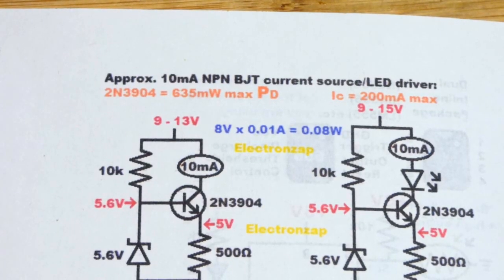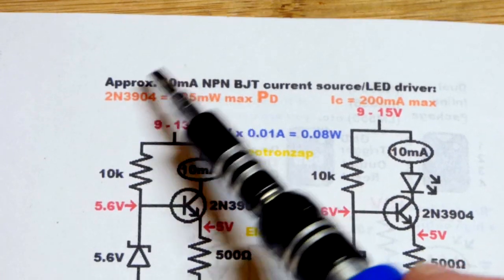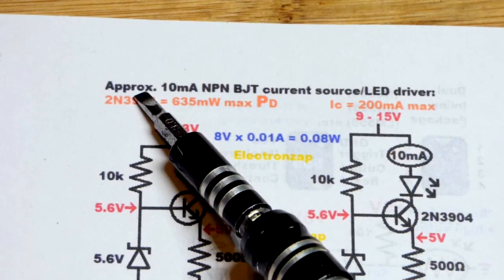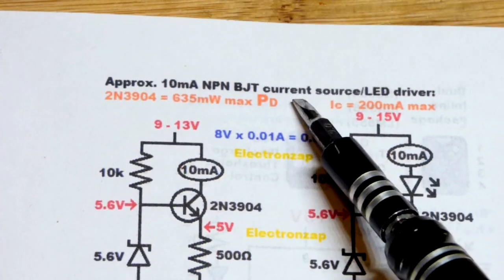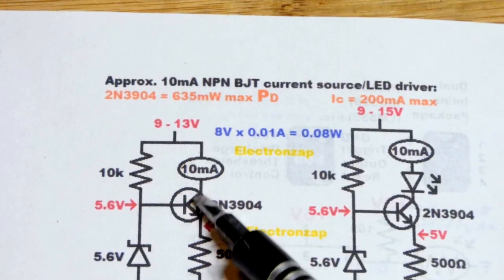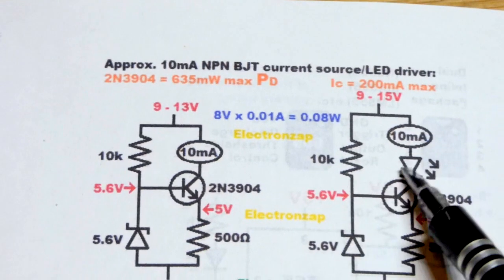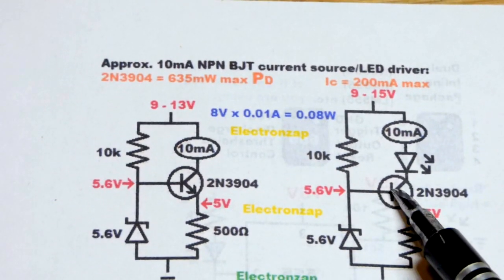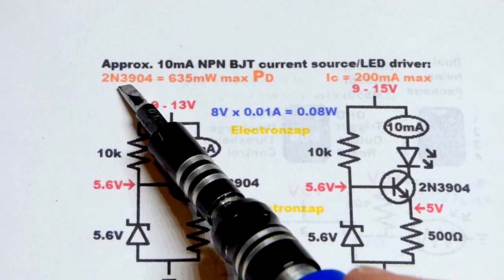And of course I do have a diagram for this. I'm making one hopefully for every video of this video series. Now we have approximately 10 milliamp NPN bipolar junction transistor—that's the abbreviation—current source or LED driver. So it could be an LED driver if you want 10 milliamps and you add an LED to it. So driver means it's setting the current through it.